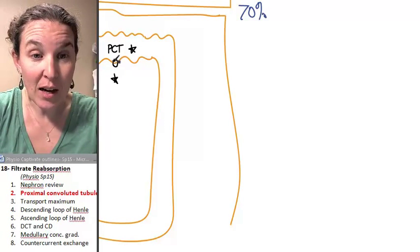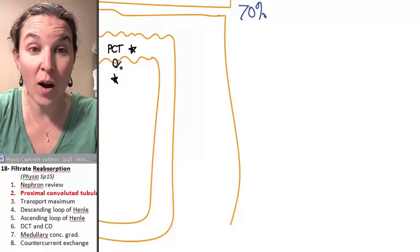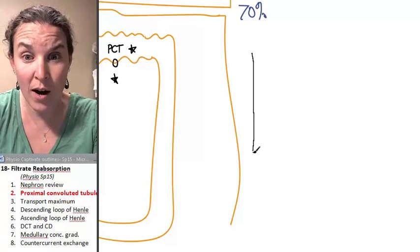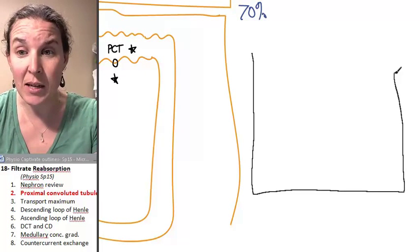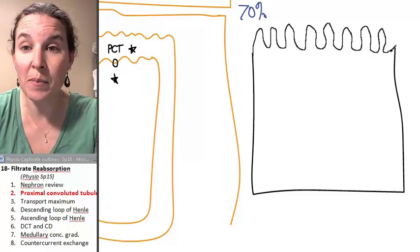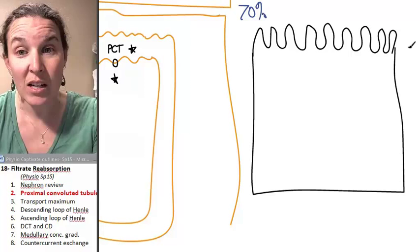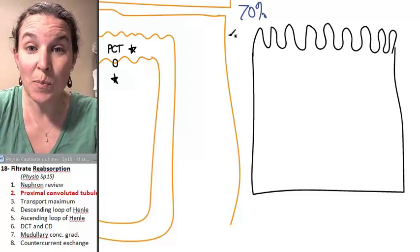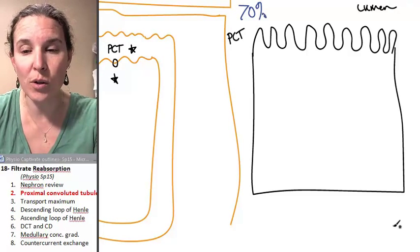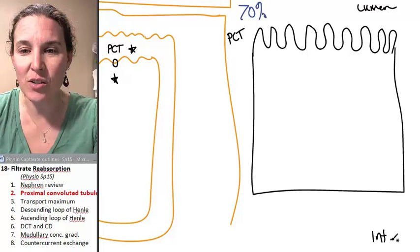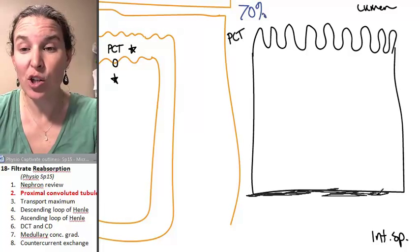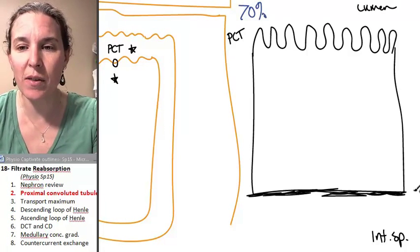I'm taking a cell, one single cell, from this edge of the proximal convoluted tubule so that you can keep track of where my lumen is because it makes a difference. The cells range from simple cuboidal to simple columnar. So this is a single proximal convoluted tubule cell. It's simple cuboidal epithelium.